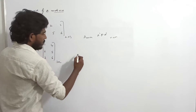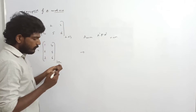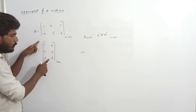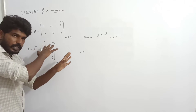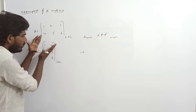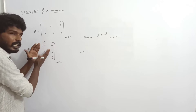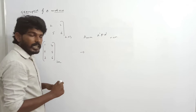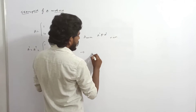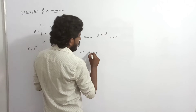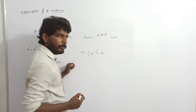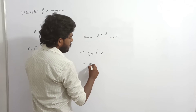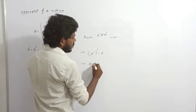Now the most important properties of transpose. First: transpose of transpose — if you transpose again — means A transpose whole transpose is again A. Second property: A plus B whole transpose.